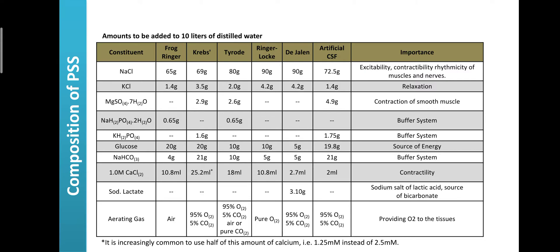The Tyrode solution is prepared by adding 80 g of sodium chloride, 2 g of potassium chloride, 2.6 g of magnesium sulfate, 0.65 g of sodium dihydrogen phosphate, 10 g of glucose, 10 g of sodium bicarbonate, 18 ml of 1-molar calcium chloride, and 95% oxygen along with 5% carbon dioxide, or you can use pure oxygen or carbon dioxide.